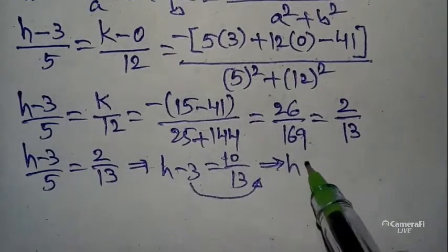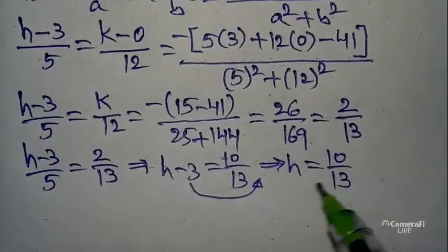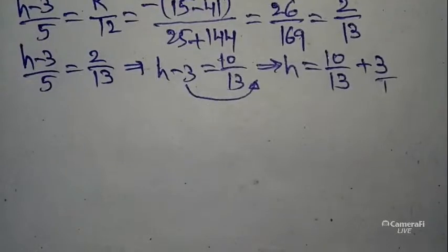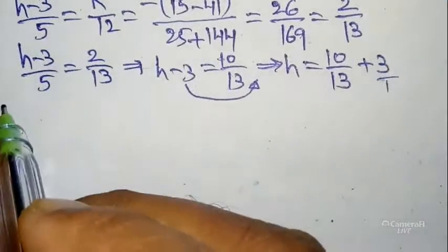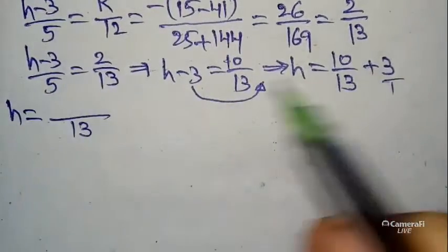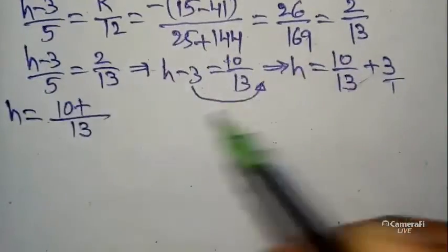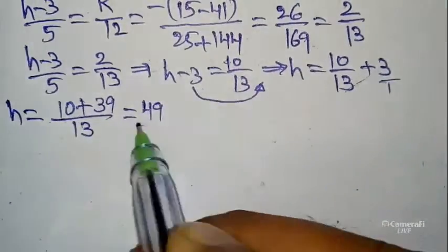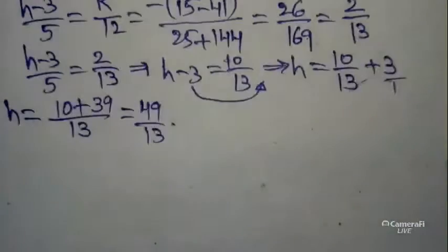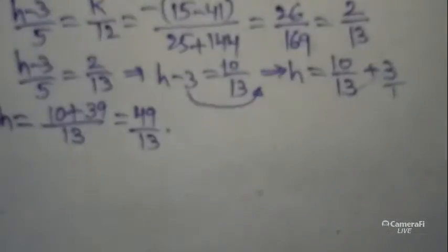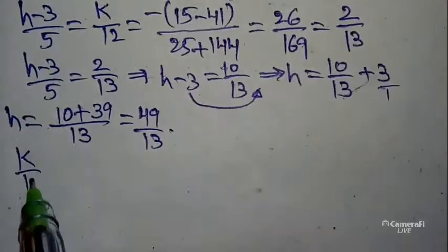Moving to the right side: h = 10/13. Bringing −3 to the right side gives +3, which is 3/1, so cross multiplying: h = (10 + 13×3)/13 = (10 + 39)/13 = 49/13. So h = 49/13.